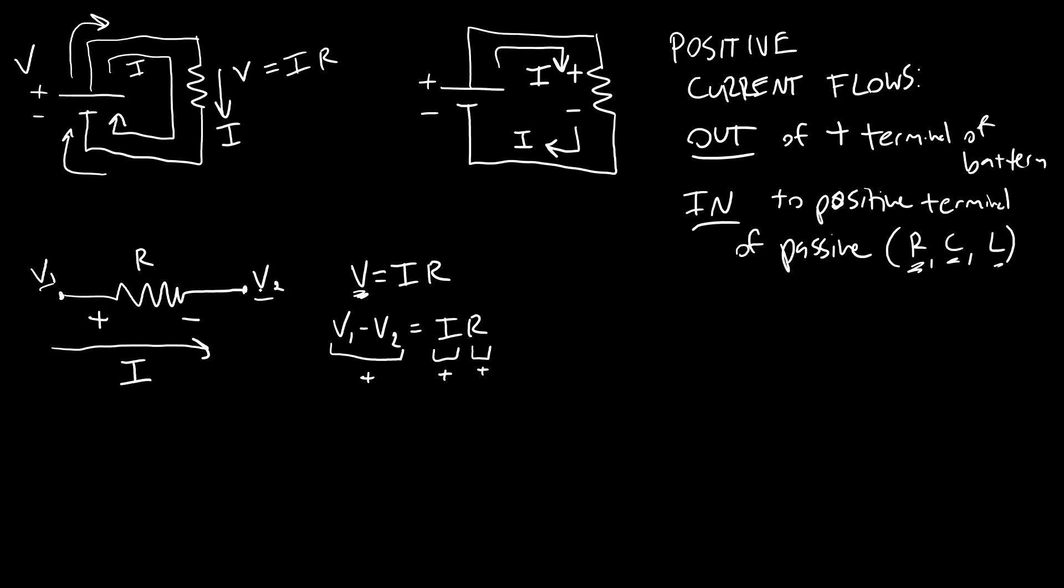If I was wrong about this direction, if the voltages are reversed, if v2 is higher than v1, so if v2 is bigger than v1, then v1 minus v2 is now going to be negative, which means I'll also get a negative number for my current when I solve that, which simply means that the current is actually flowing the other direction, the current is going that way.